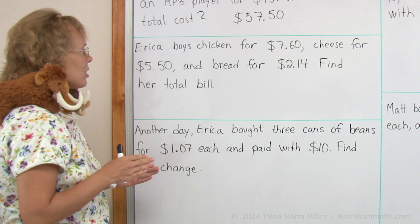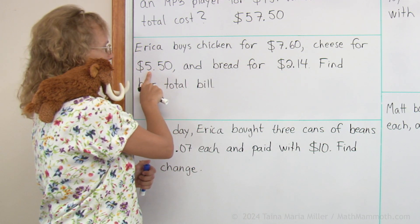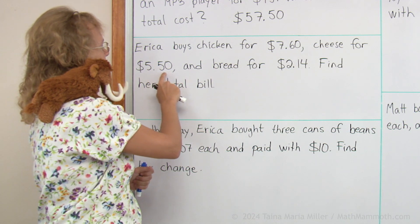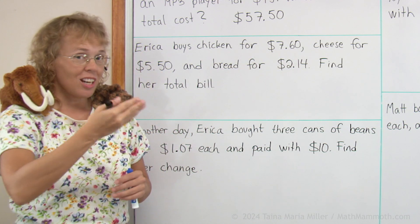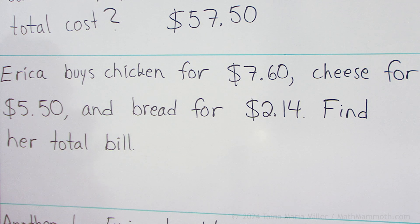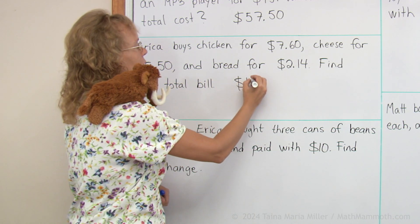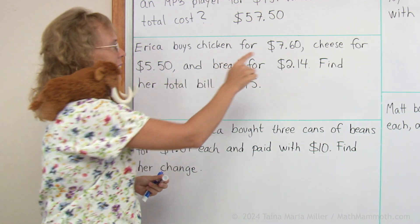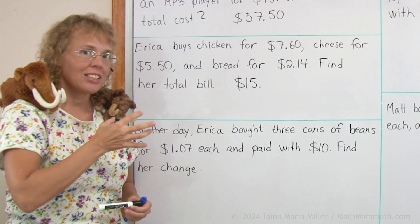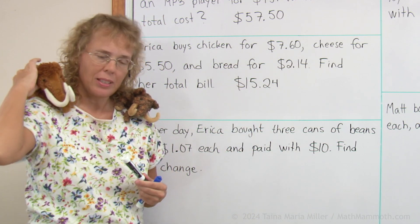We can look at the numbers and add. Let's add the dollar amounts first: there's 7 and 2 and 5, so that would be 9 and 5 is 14 — $14. But then when you look at the cents, 50 and 60 go over 100 cents, so there's going to be one more dollar coming from all those cent amounts. So we're actually going to get not just $14, but $15. Then the cents: 60 plus 50 is 110, so we get 10 cents from that, plus 14 cents — so 24 cents. The total is $15.24.